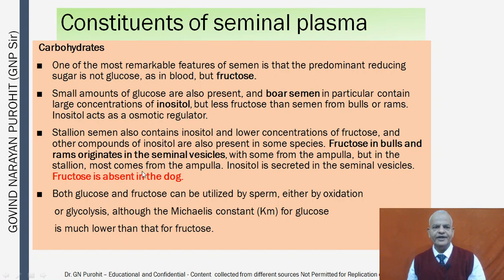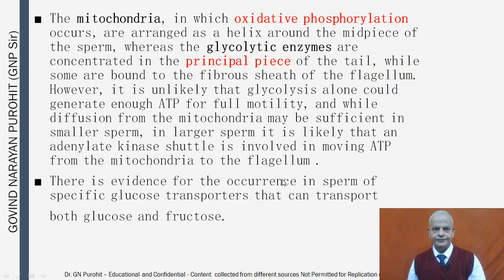In bulls and rams, fructose originates from the seminal vesicles with some from the ampulla, but in stallions most comes from the ampulla. Inositol is secreted in the seminal vesicles. Fructose is absent in the dog. Both fructose and glucose can be utilized by sperm through oxidation or glycolysis. Mitochondria for oxidative phosphorylation are arranged as a helix around the midpiece, while glycolytic enzymes are concentrated in the principal piece of the tail.